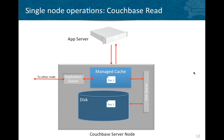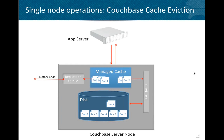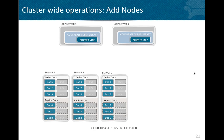For a read operation, when your application asks for document one, if it's in the managed cache, it's served straight from there. If the managed cache becomes full, Couchbase Server evicts the item and flushes it to disk. In the case of a cache miss, the item is fetched from disk through the disk queue into the managed cache and then returned to the application.